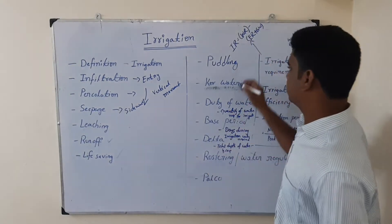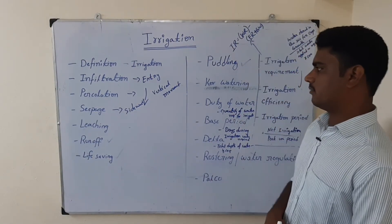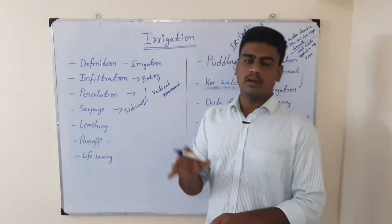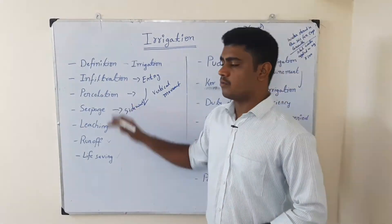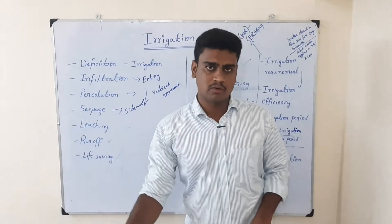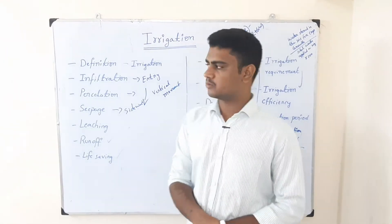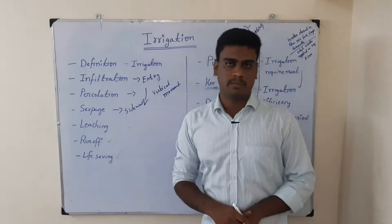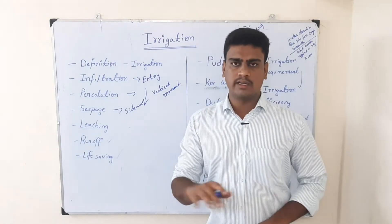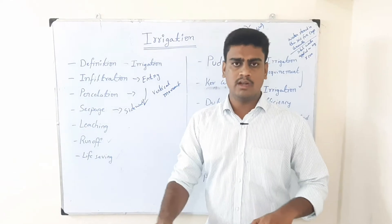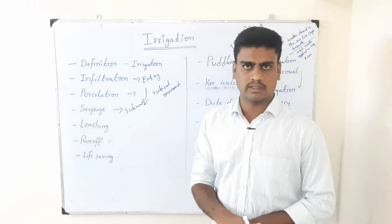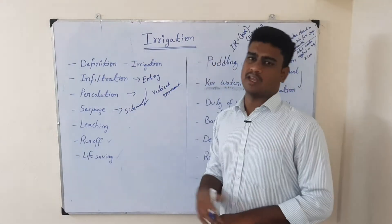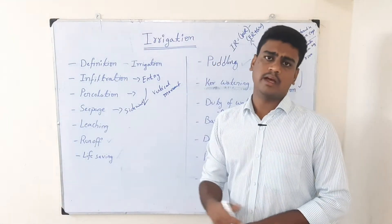The next term is puddling. We have seen infiltration and percolation — after water enters the soil, sometimes we should not allow vertical or downward movement of water into the deeper layers of the soil; we have to stop it. For that reason, puddling is done. Puddling is nothing but hardening the subsurface layer of the soil to stop the downward movement of water. This practice is especially done in the rice crop, with the help of a tractor using cage wheels.